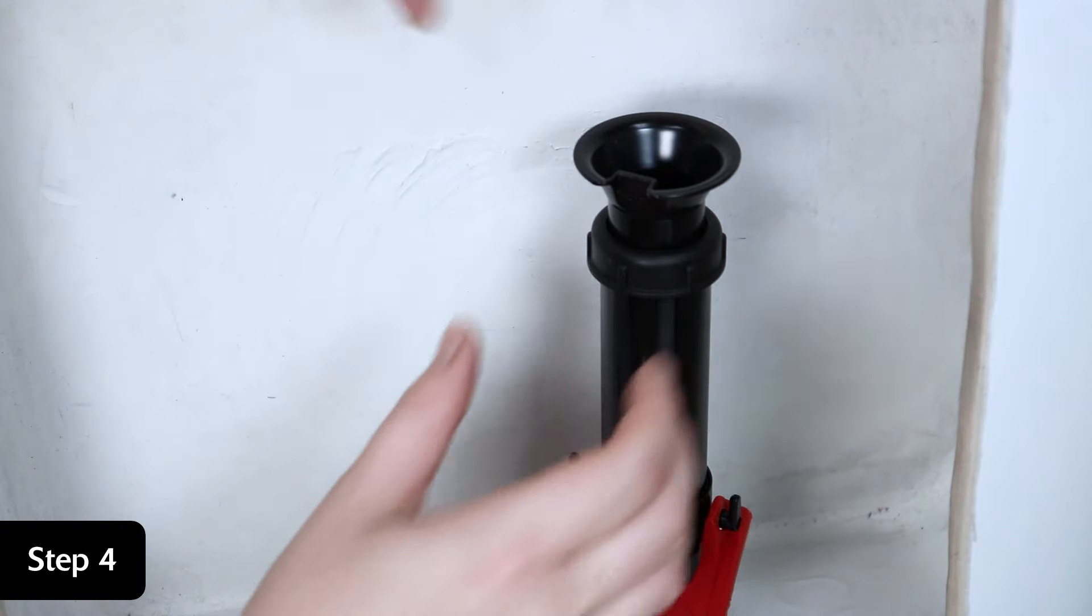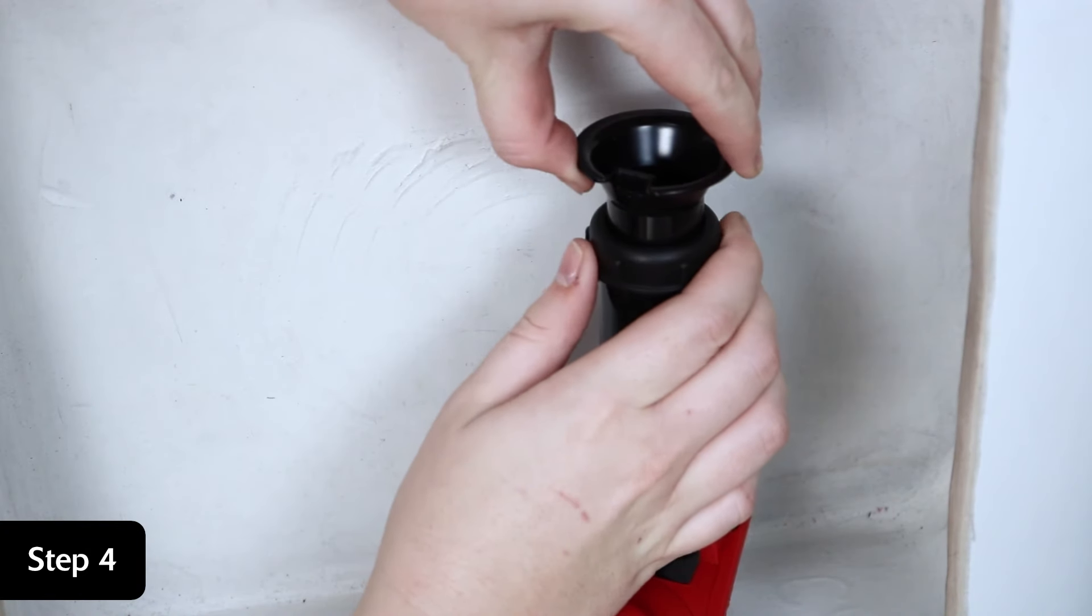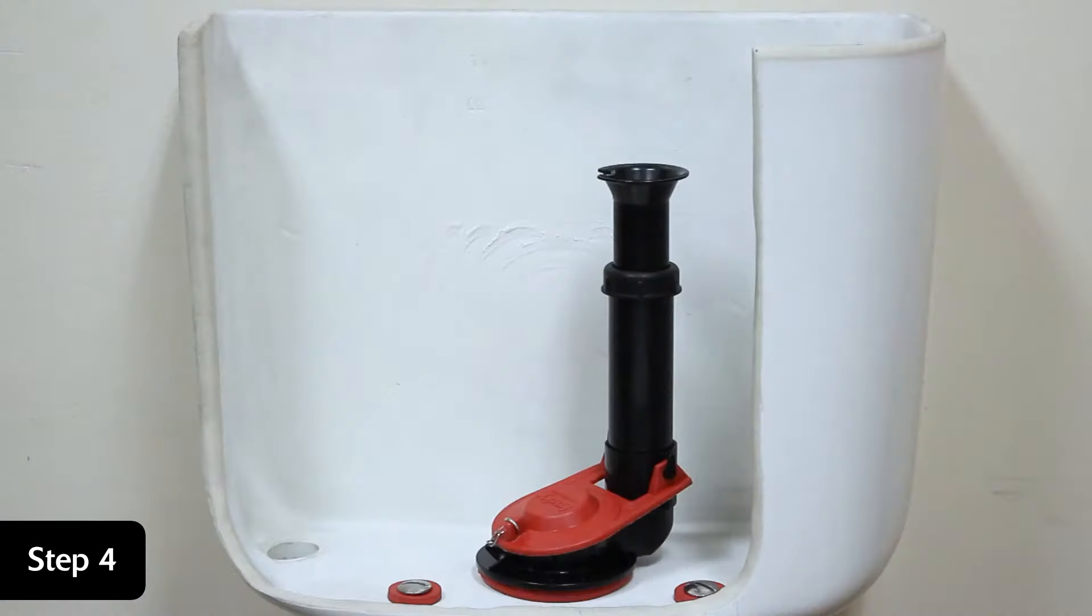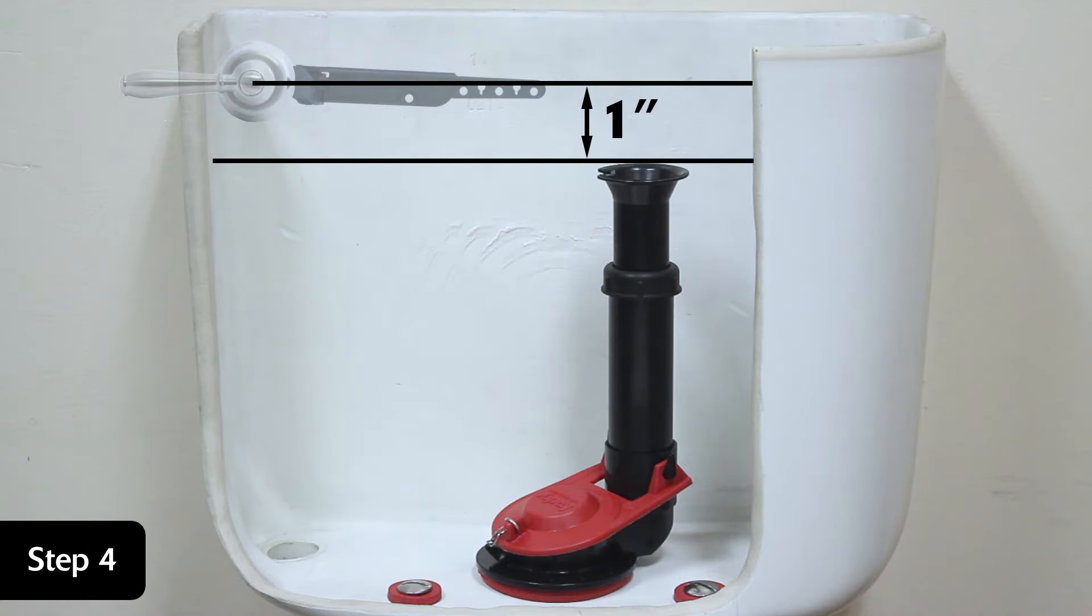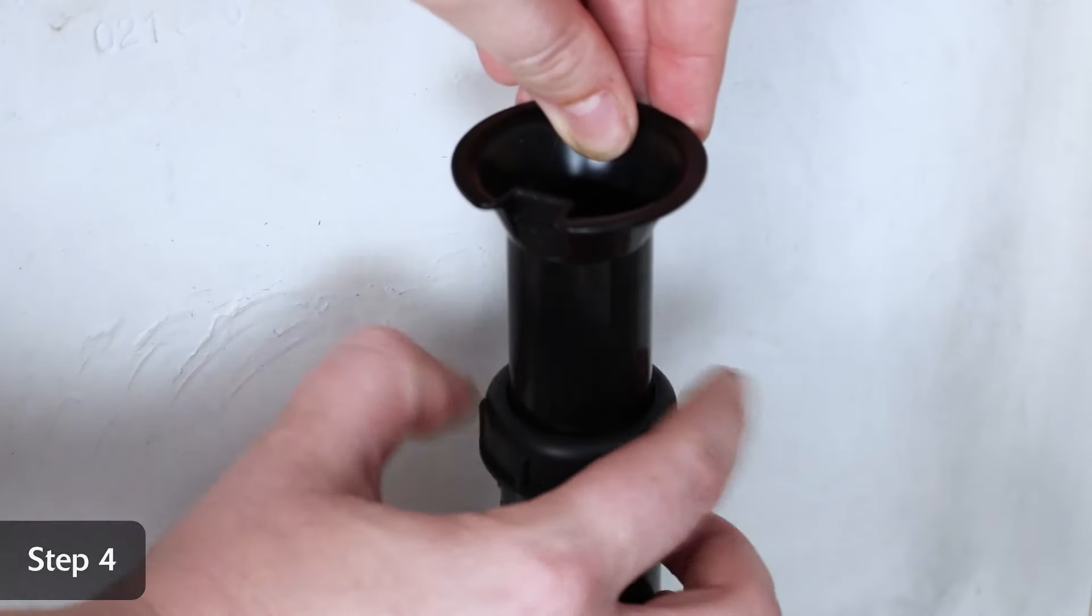Next, set the height of the flush valve. Loosen the lock nut and extend the overflow tube until the top of the overflow tube is one inch below the flush lever nut. Then hand tighten the lock nut.